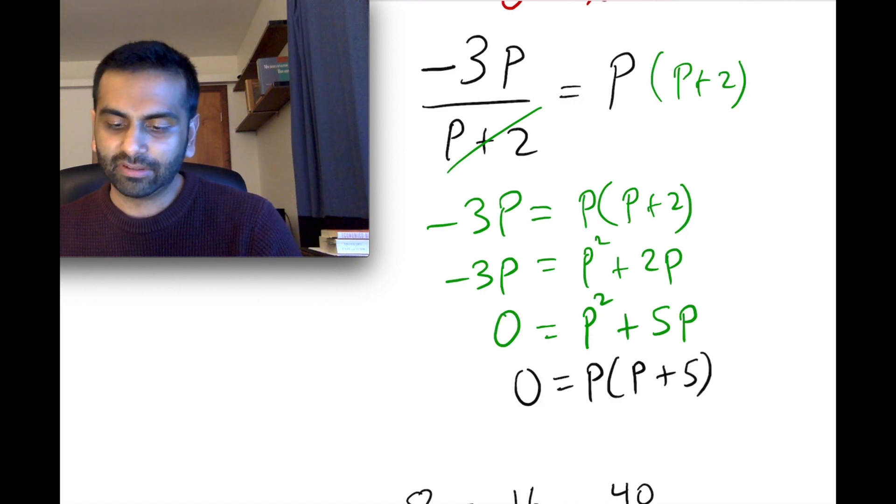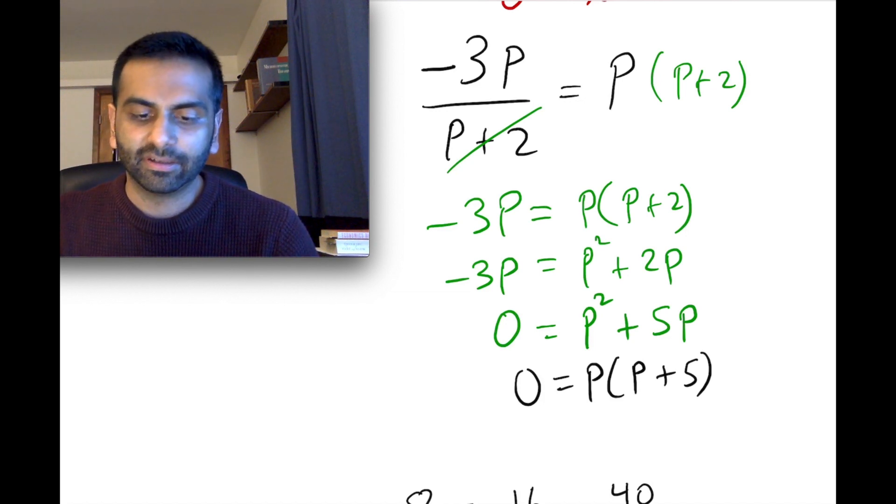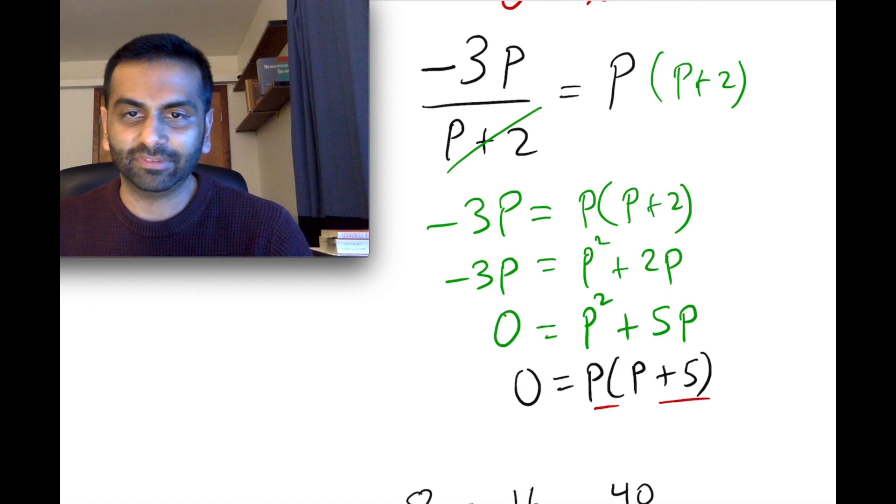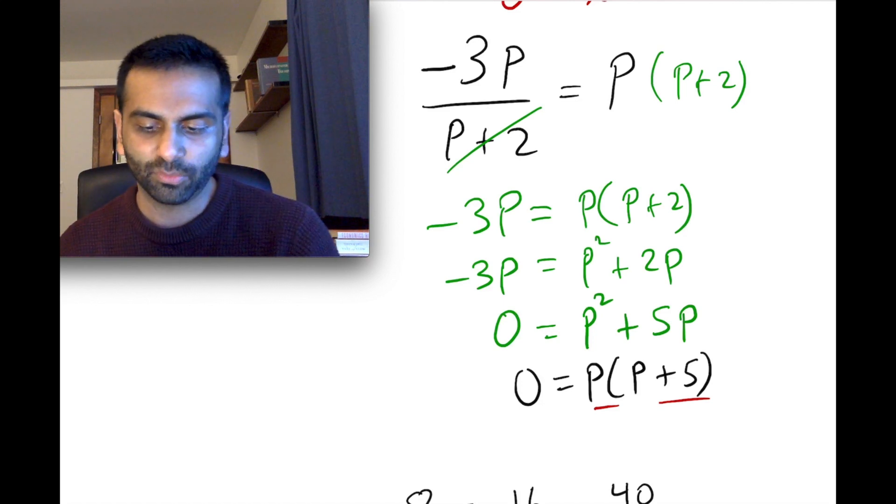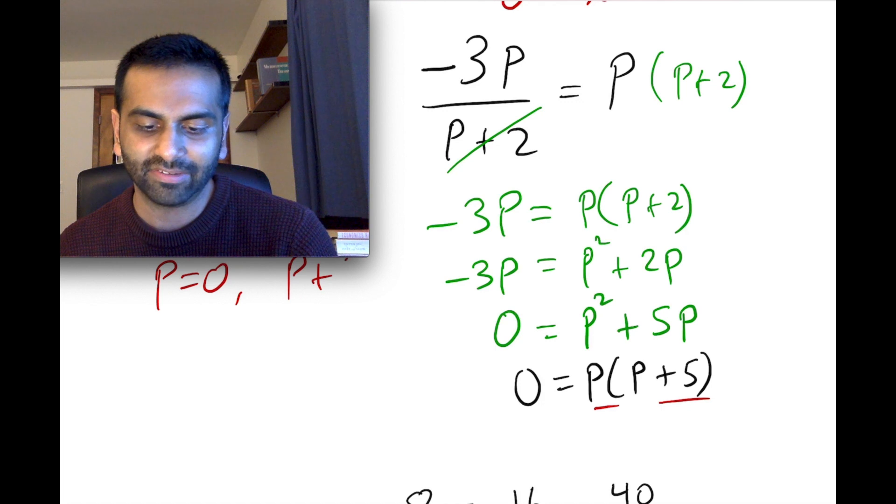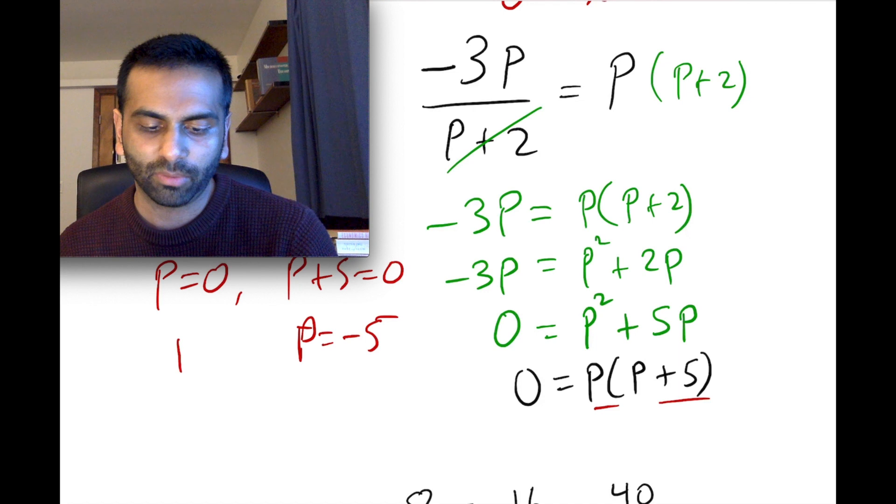And again, you can always distribute it out to be confident. p times p is p squared, and then p times 5 is 5p. So you know that you factored it correctly. Once you have it down to this, now it's easy enough because the only way this product of these two is 0 is either if the first guy, p is equal to 0, and or the second guy, p plus 5 is 0. So we break this down into p equals 0, or p plus 5 is 0. Subtract 5 from both sides. And so p equals negative 5, or p equals 0. So those will be our two solutions.